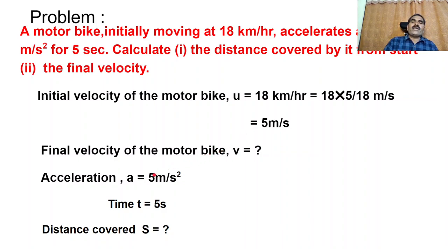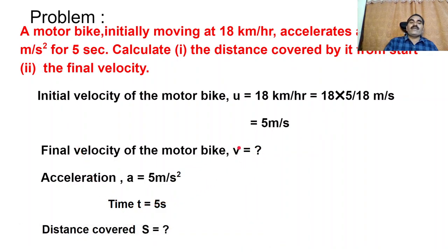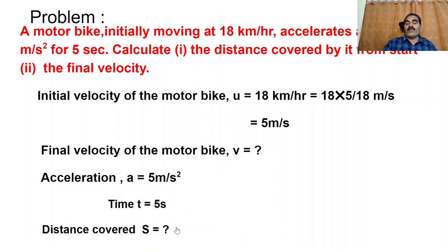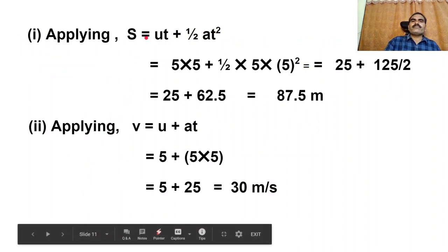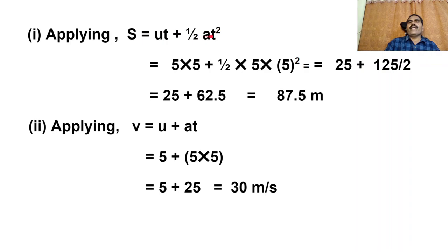Acceleration is 5 meters per second square, time is 5 seconds. In the given problem, U, T, and A are all given. So we have to use the second equation of motion: S equals UT plus half AT square.